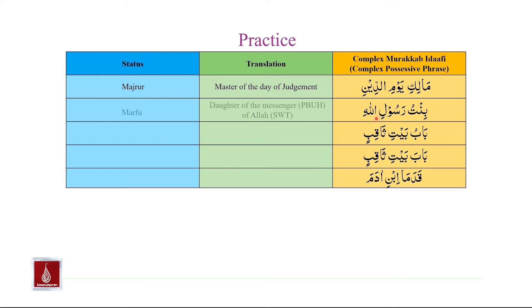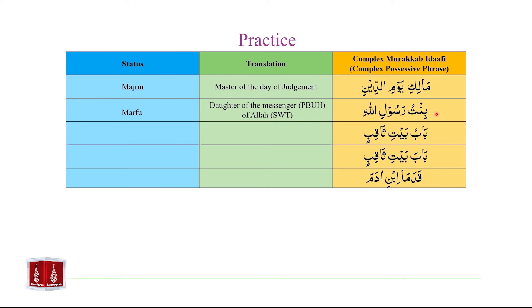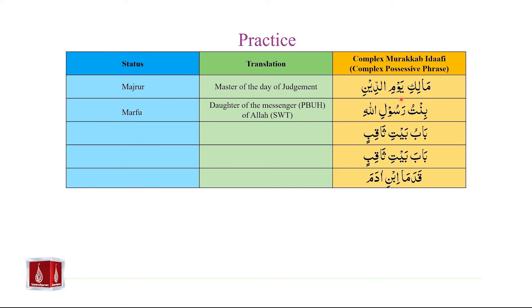Next: بنت رسول الله — 'daughter of the messenger of Allah.' بنت meets criteria for Mudhaaf. رسول meets criteria for Mudhaaf Ilai as it is Majroor, and also meets criteria for Mudhaaf because there is no Al and no Tanween, followed by الله which meets criteria for Mudhaaf Ilai. So بنت رسول الله is a complex Murakkab Izafi. Its status is Marfu because the Mudhaaf بنت is Marfu. رسول, as Mudhaaf Ilai for بنت, needs to be Majroor, and الله as Mudhaaf Ilai also needs to be Majroor. But the status of the entire Murakkab Izafi is Marfu.